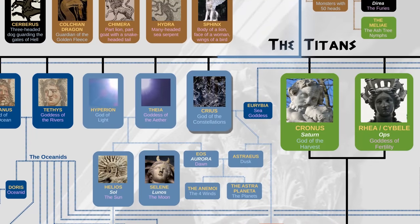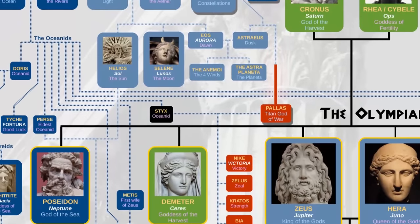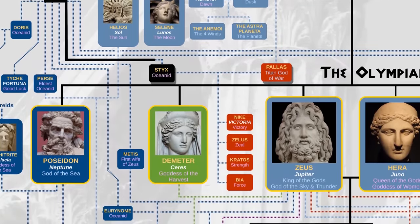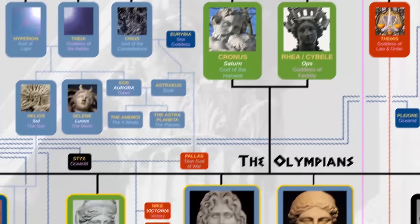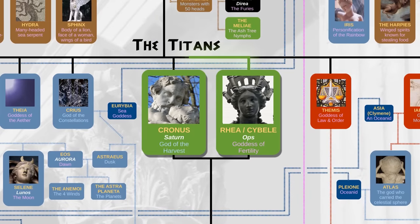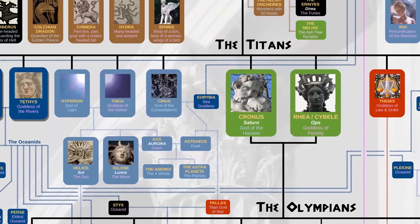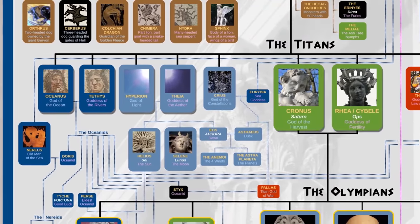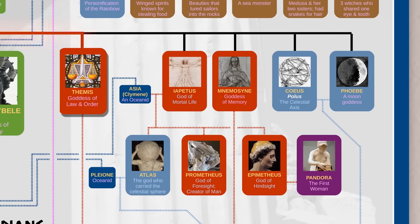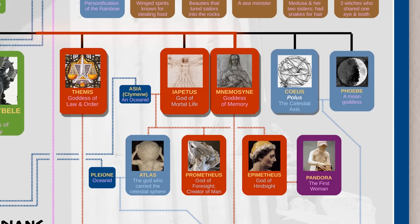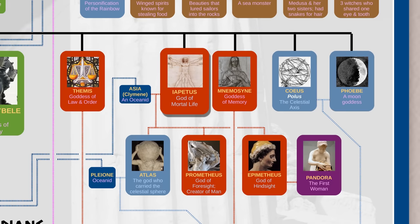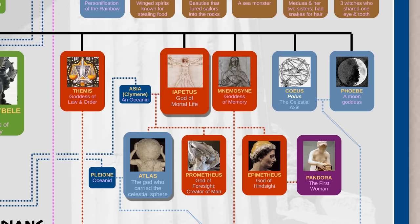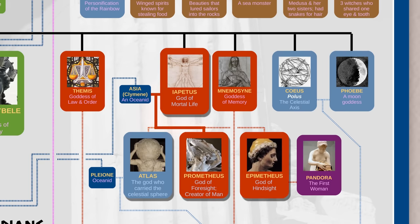One that is not is Creus. He married a daughter of Pontus and from them came Pallas, the original god of war. Pallas married Styx and together they were the parents of Kratos. In recent years, Kratos has become well known because he shows up in the God of War video game series. He had a sister named Nike, who the famous shoe company is named after. We then get Cronus, god of the harvest, and Rhea, goddess of fertility. Note that in this generation, we get a couple for the sea, a couple for the sky, and a couple for the earth. The rest of the Titans include Themis, goddess of law and order, Iapetus, god of mortal life, Mnemosyne, goddess of memory, Coeus, the celestial axis, and Phoebe, a minor moon goddess. Out of these five, Iapetus is perhaps the most important because he was the father of Atlas, the god who is often shown with a globe on his back, as well as Prometheus and Epimetheus, gods of foresight and hindsight.